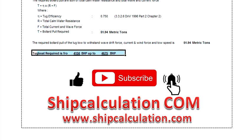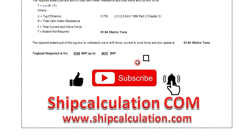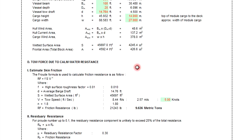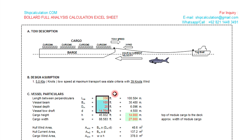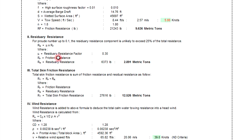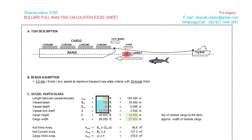In summary, bollard pull analysis depends on how large the item you are towing is. You need to calculate the wind surface area, current, and wave resistance — all of which contribute to the resistance when pulling the barge using the tugboat.